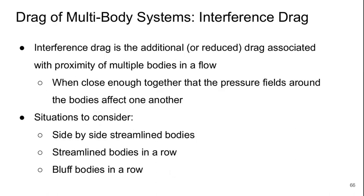So the very last thing that we're going to talk about today is the drag of multi-body systems. And this introduces the idea of interference drag. So interference drag is the additional or sometimes reduced drag that's associated with the proximity of multiple bodies to one another in a flow. When the bodies are close enough together that the pressure fields around them affect one another, that's when we have effects of interference drag.